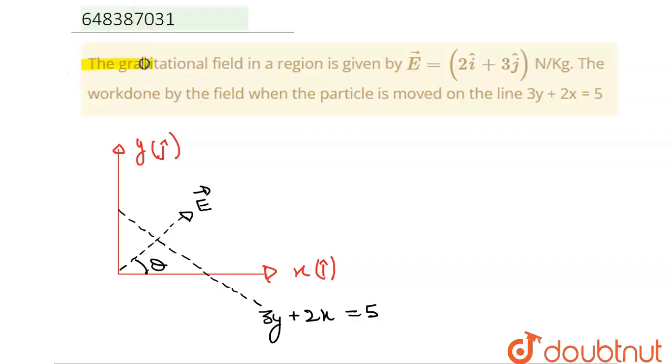Hello students, the question is: the gravitational force in a region is given by 2i cap plus 3j cap Newton per kg. The work done by the field when the particle is moved on the line 3y plus 2x equals 5.